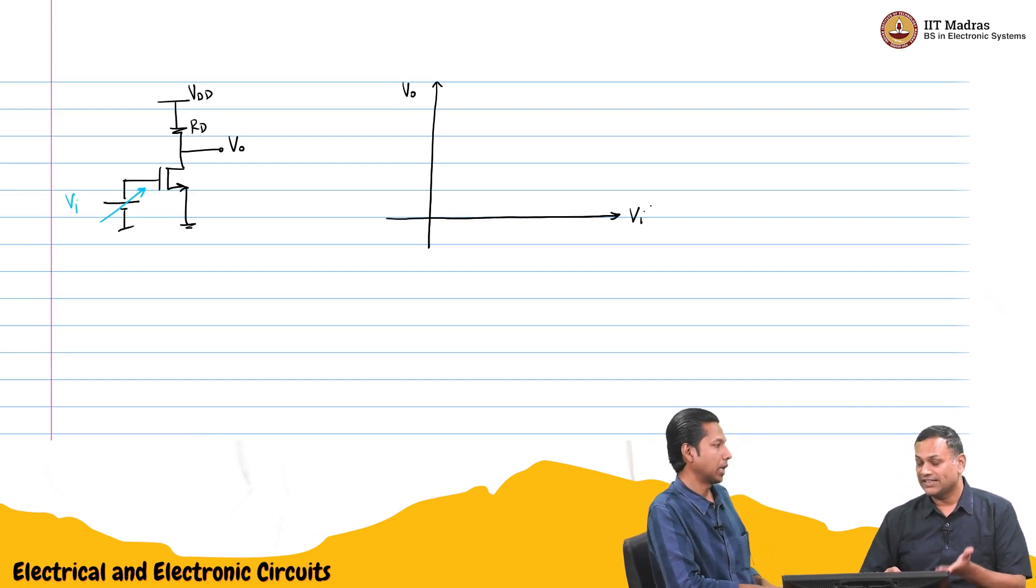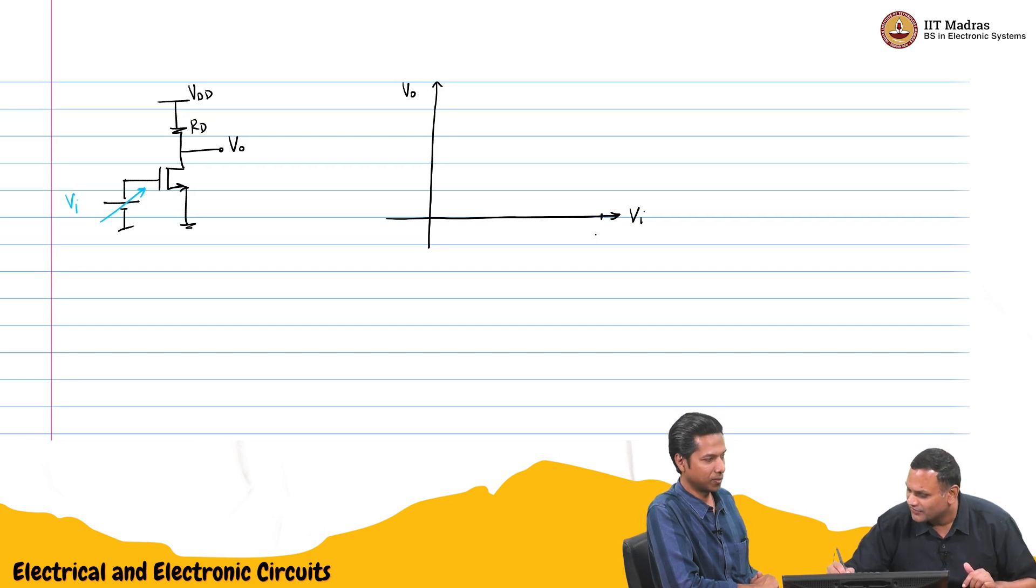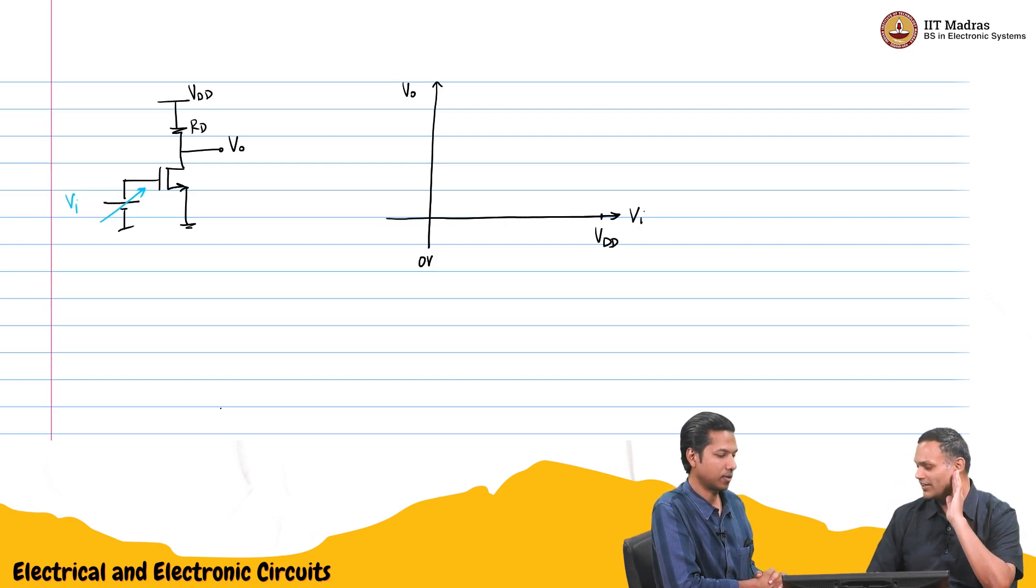And as usual I think for the BJT case what we did was we started from 0 and went all the way to Vcc. We will also assume that we are going to go from 0 to Vdd. But I think this may be easier because at least till Vt. The transistor is off. No current.